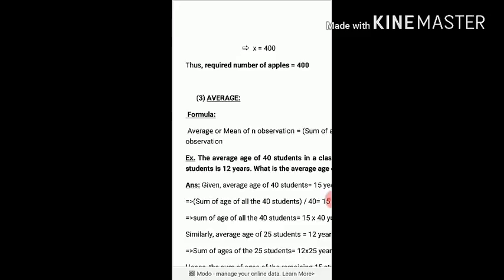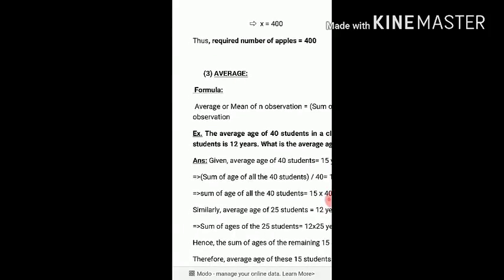Next, the third topic is average. Average is also known as the mean. For example, suppose you have five observations: 10, 20, 30, 40, 50. The average — whose other name is mean — is the sum of all observations divided by the number of observations. So average equals 10 plus 20 plus 30 plus 40 plus 50, divided by 5.